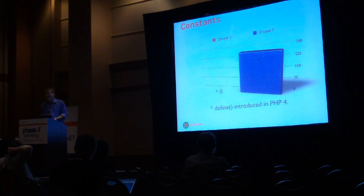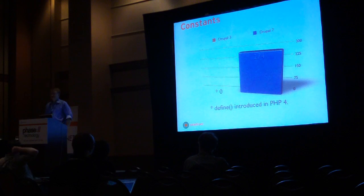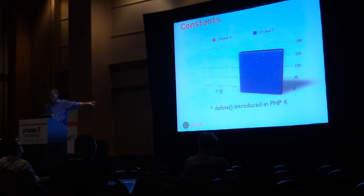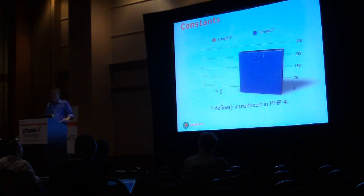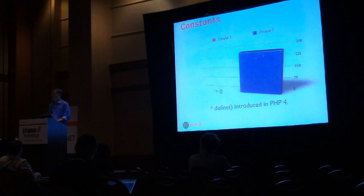For example, there are no constants in Drupal 3 because the define() function doesn't come into play until PHP 4. We use constants all the time — we have 274 constants in Drupal 7, none in Drupal 3. So when people ask why Drupal has this hook system, the answer is because it was the closest they could come to the kind of behavior they wanted given the limitations of the environment they were developing in.